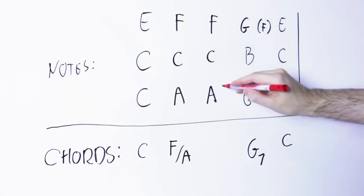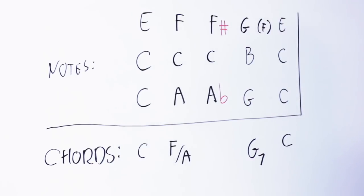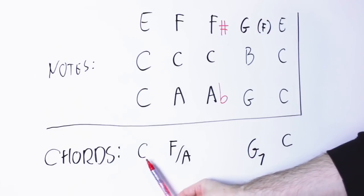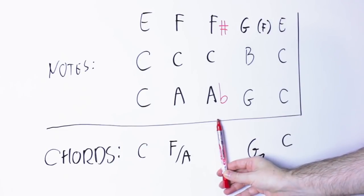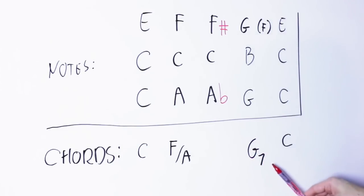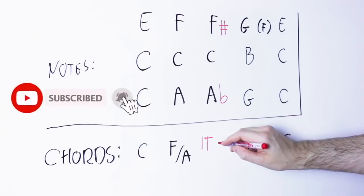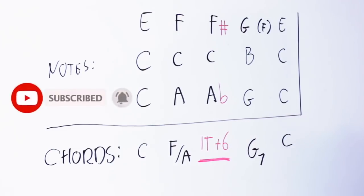But what happens if we do both those things at the same time? And this, my friend, is what we called an Italian augmented sixth.